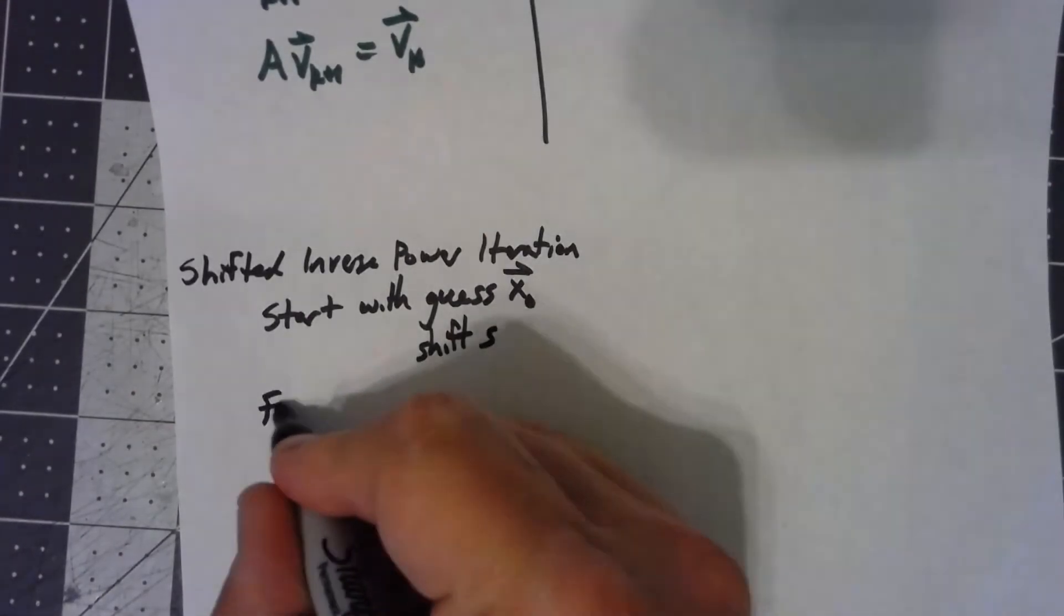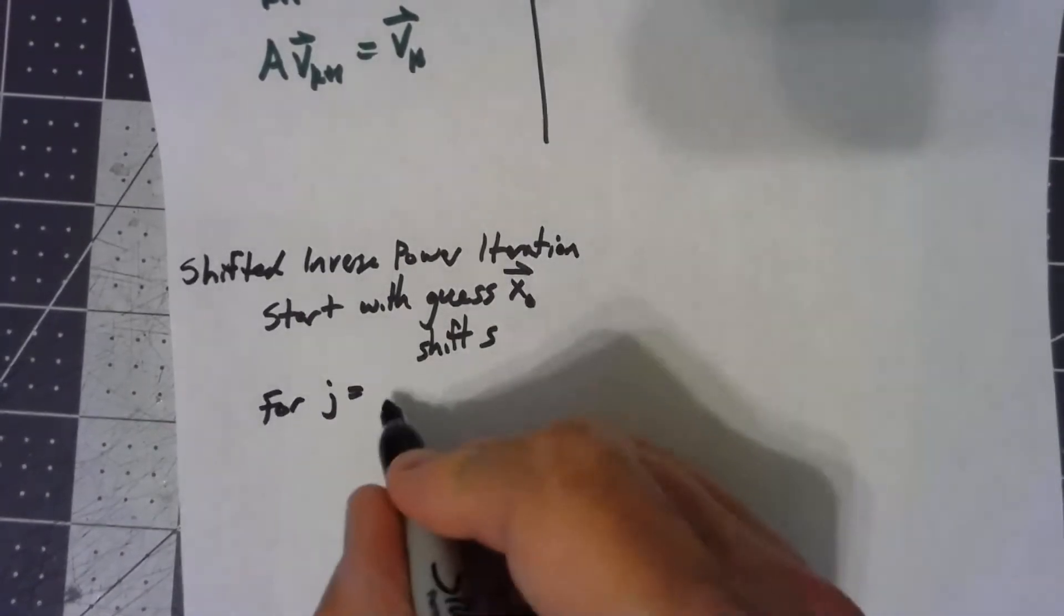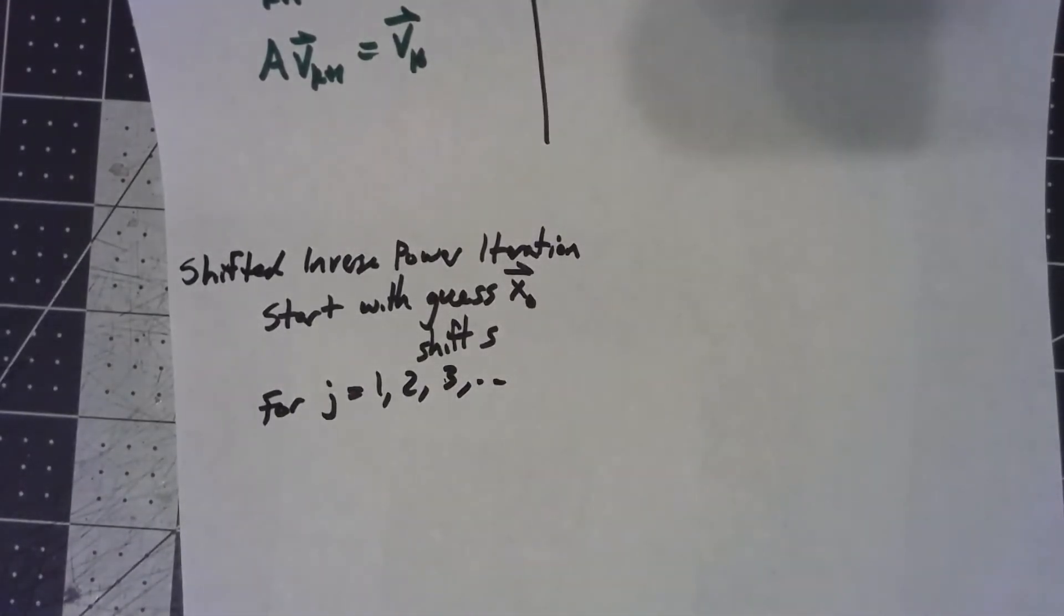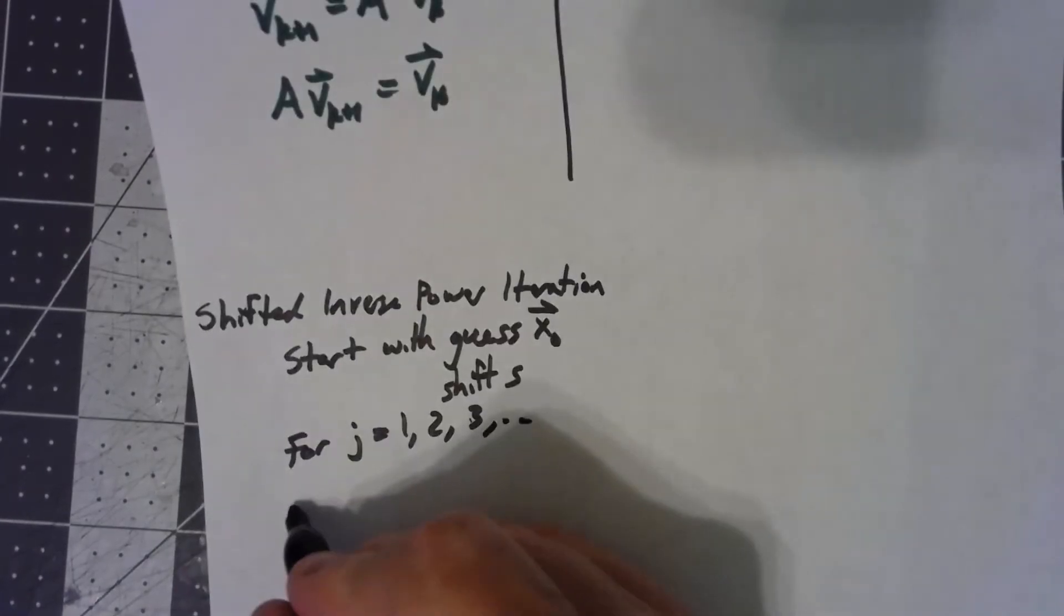So then, for j equals 1, 2, 3, we're iterating. We'll normalize the vector, just like we did for our standard thing.